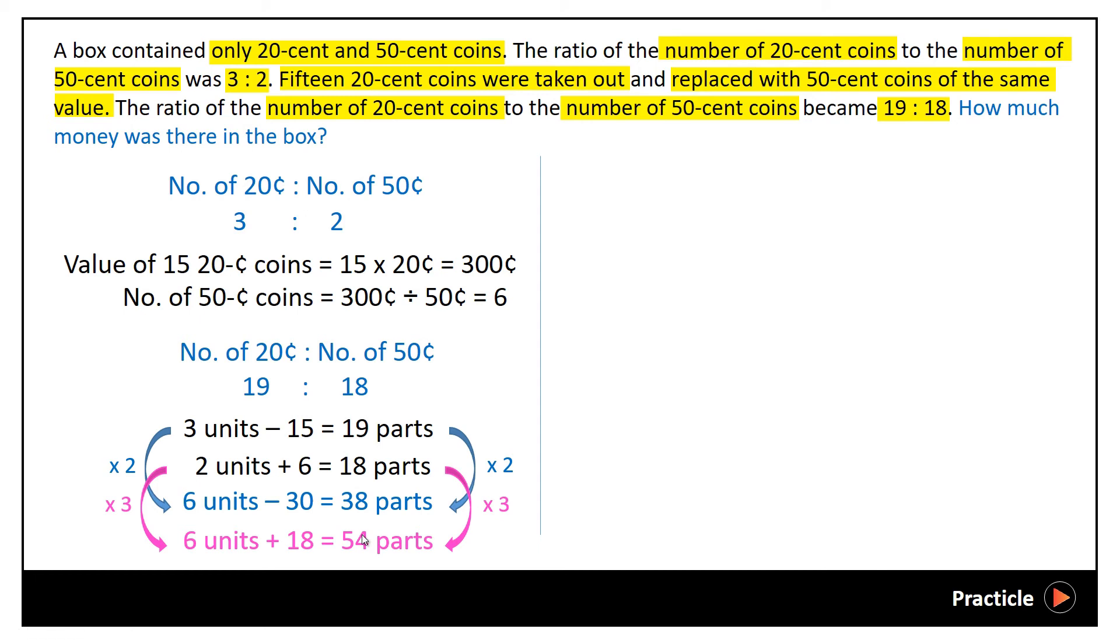So far so good. What do we do next? Since the number of units now are equal, we can compare the 2 equations. And by comparing, we should be able to find that 16 parts is actually 30 plus 18, which gives us 48. We can easily move on to the next step to find 1 part by taking 48 divided by 16, which gives us 3.